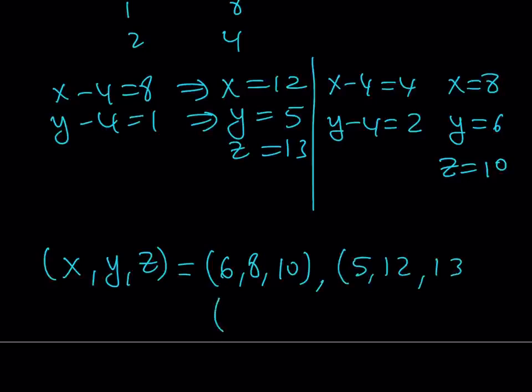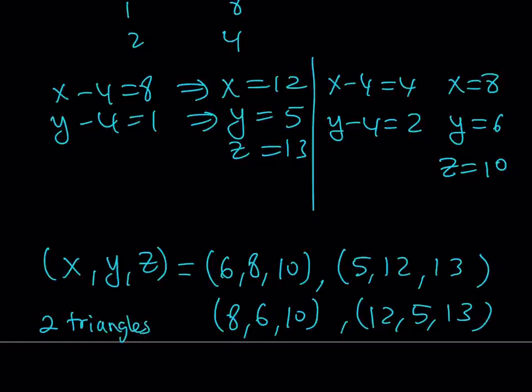And of course, since x and y are interchangeable, 8, 6, 10 would work for x, y, z values. And 12, 5, and 13 would also work. But in essence, we only have two triangles that are different, and those are 6, 8, 10, and 5, 12, 13 triangle.